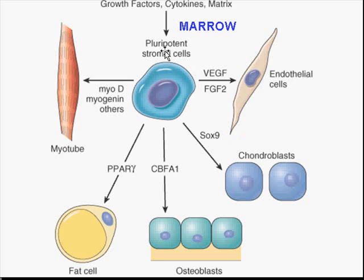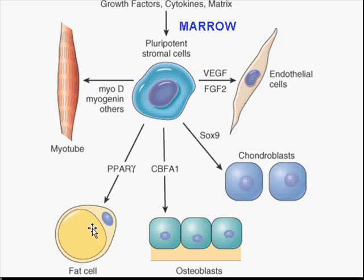Here's your pluripotent stromal cell in the marrow. Under the influence of myo-D, myogenin, and others, it differentiates into a myocyte. Under the influence of vascular endothelial growth factor or fibroblast growth factor II, it might differentiate into an endothelial cell. Under the influence of SOX-9, it becomes chondroblasts and chondrocytes. Under CBFA-1, osteoblasts. Under PPAR-gamma, fat cells. So that's the whole concept of stem cells differentiating: under the influence of growth factors and cytokines, these boring-looking cells differentiate, losing some of their totipotentiality but gaining specialization.